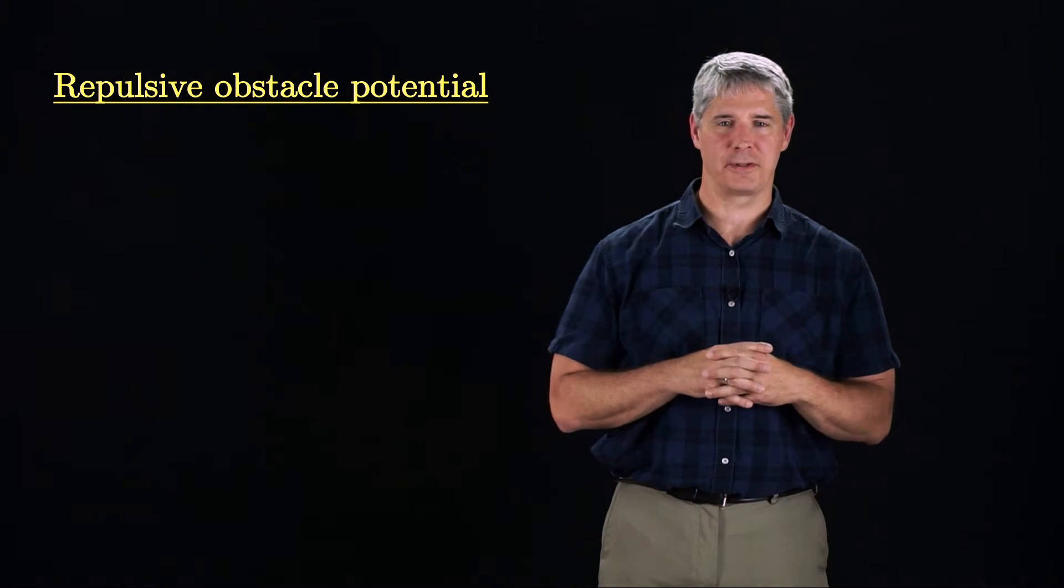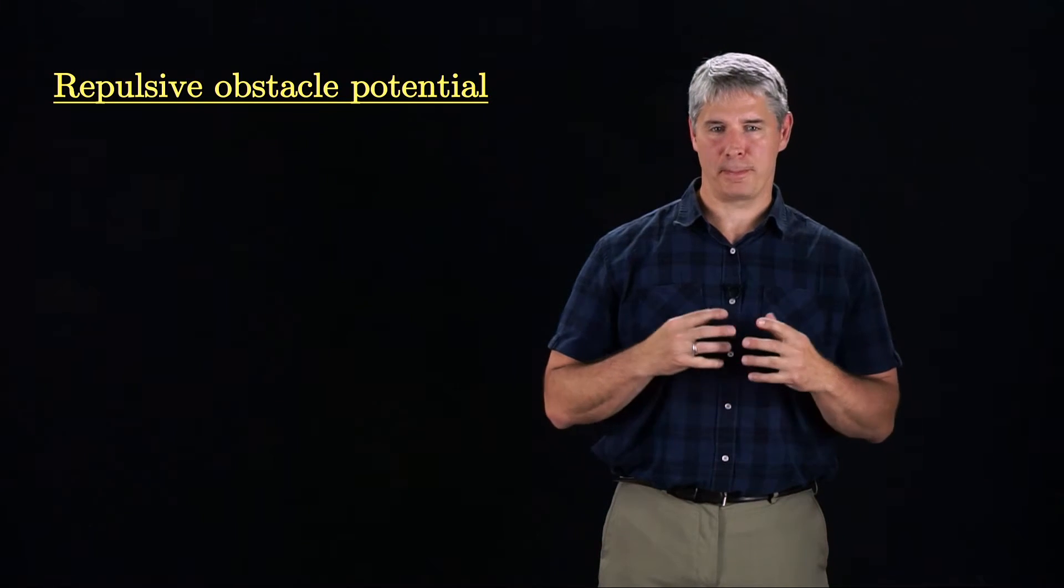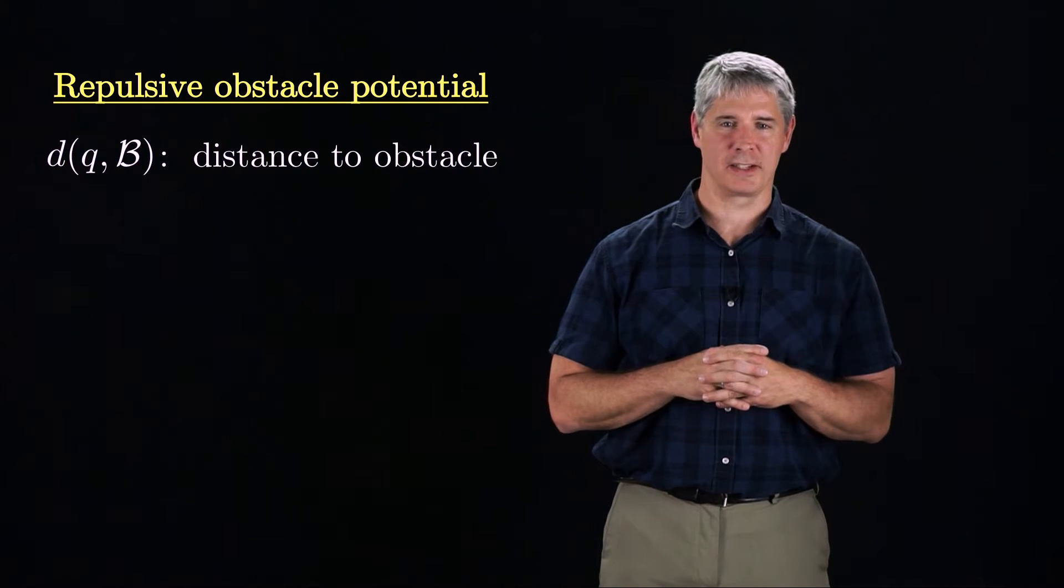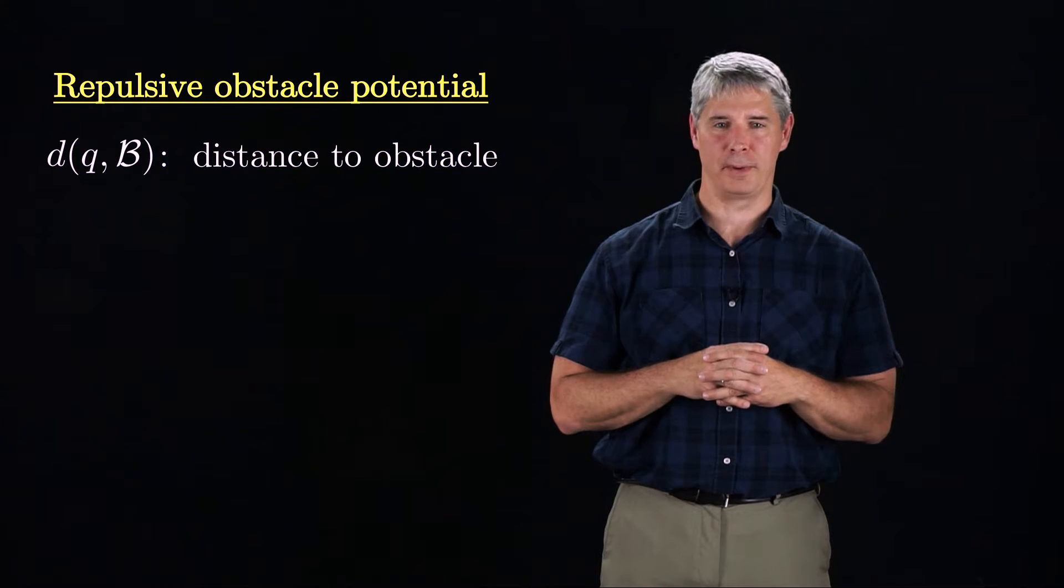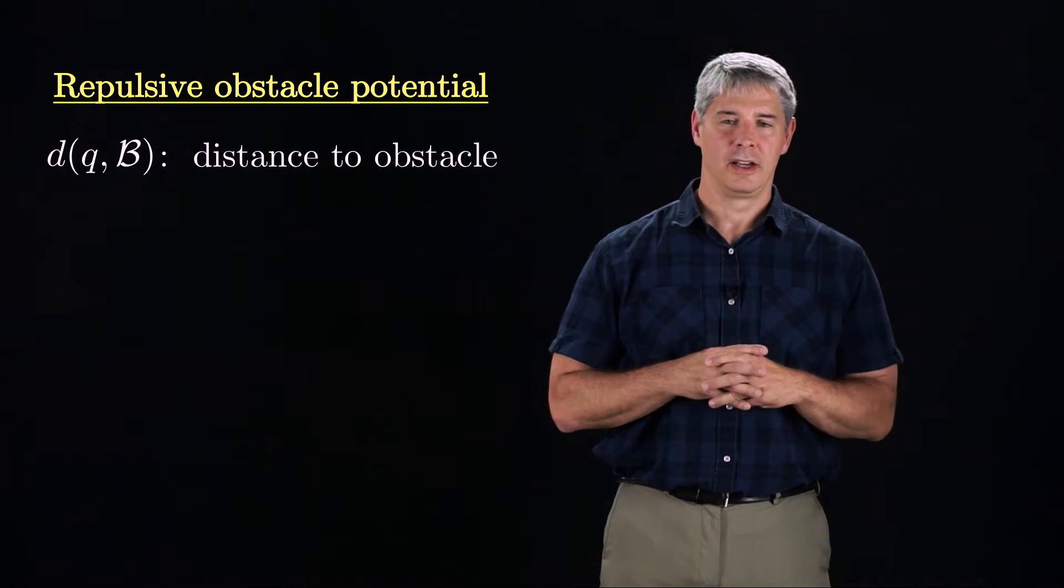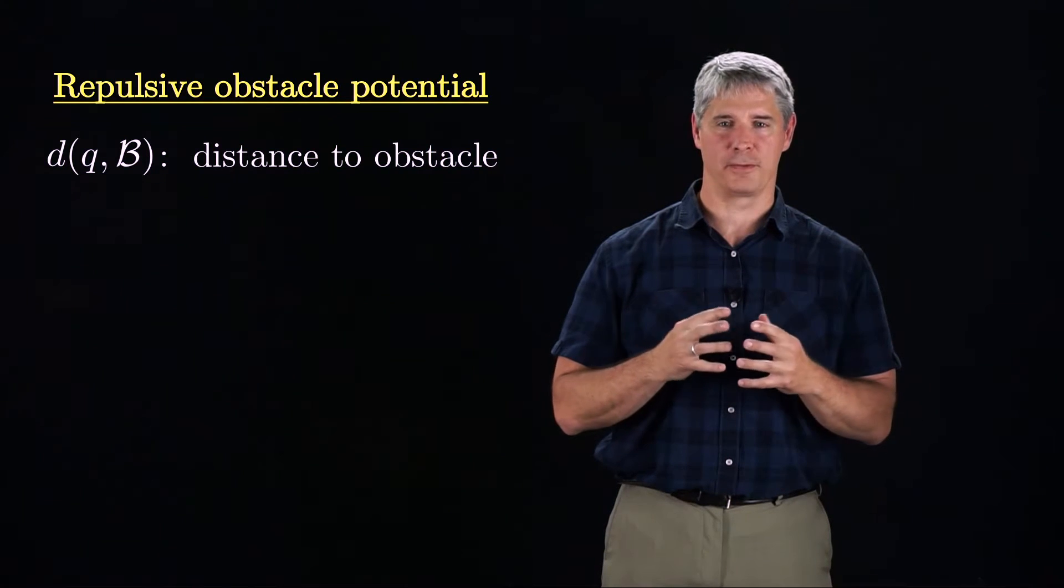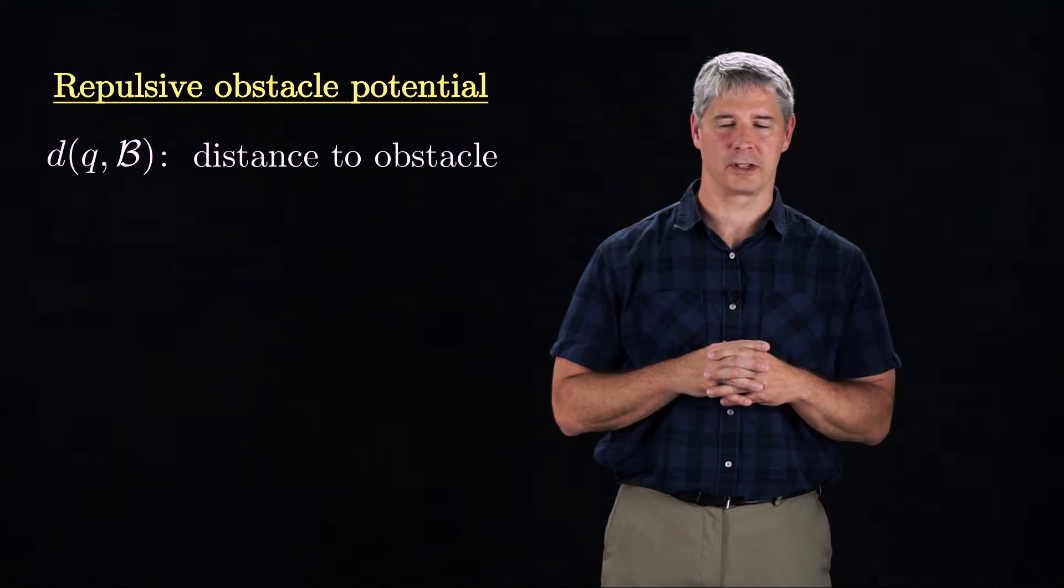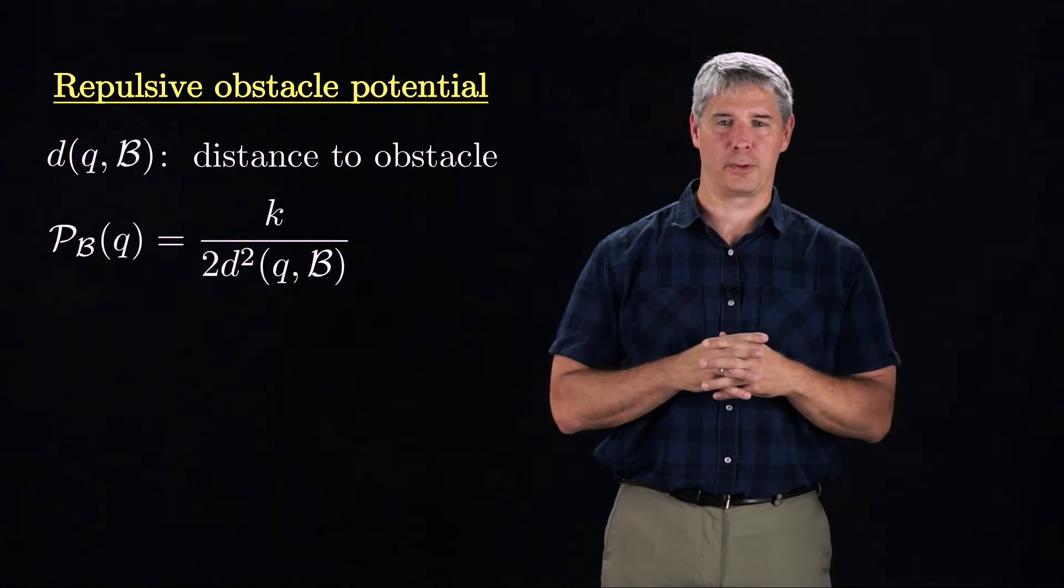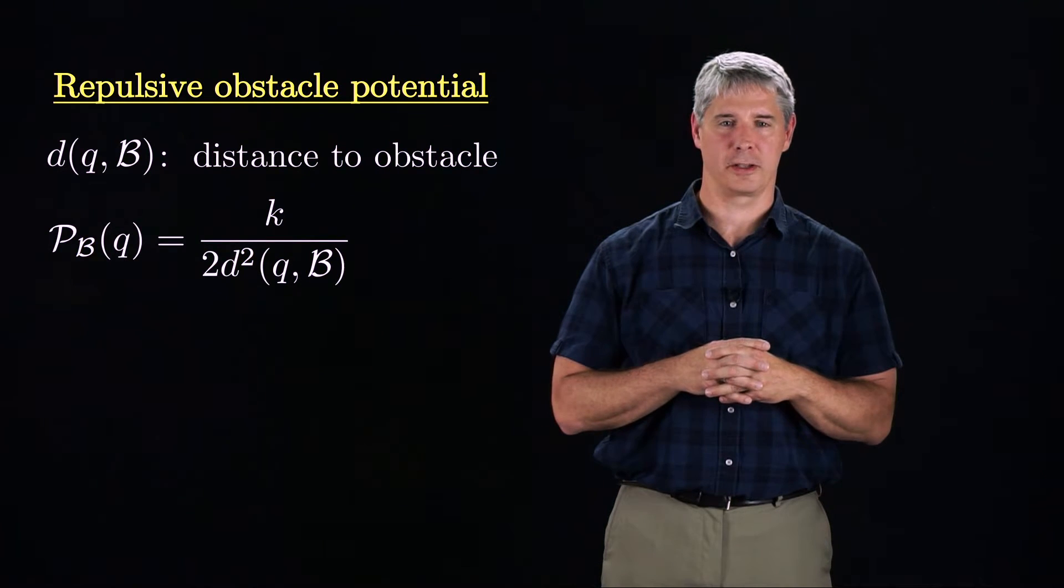To allow for obstacles in the environment, we define a repulsive obstacle potential. This repulsive potential requires a distance function between the C-space obstacle B and the configuration Q. This distance is zero when the robot is in contact with the obstacle, and positive when the robot is not in contact with the obstacle. The potential is proportional to one over the distance squared, so the potential is large when the robot is near the obstacle.